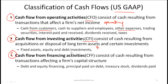Fixed assets and certain equity and debt investments — for example, buying a 20% stake in a company is an equity investment classified under CFI. Similarly, if you issue a loan (lending money to an organization), that is also considered a CFI activity. CFF consists of cash resulting from transactions affecting a firm's capital structure: any debt and equity financing, principal repaid on debt, treasury stock operations, and dividends paid are all classified as CFF.